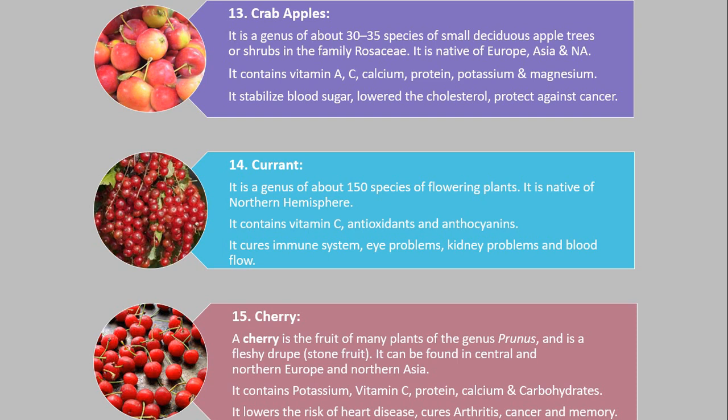Number 14. Currant. It is a genus of about 150 species of flowering plants. It is native to the Northern Hemisphere. It contains vitamin C, antioxidants and anthocyanins. It cures immune system issues, eye problems, kidney problems and blood flow.